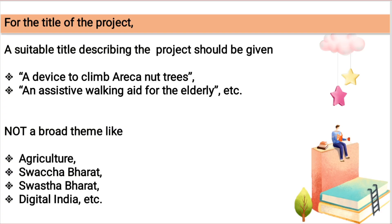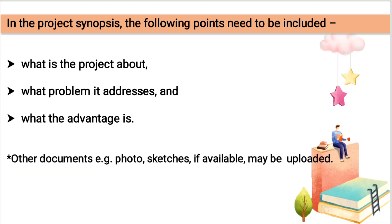These themes are very broad. They do not describe what type of project you are making to achieve Swachh Bharat or Swasth Bharat. So make sure your title completely describes your project. Those were just two examples. Now, next — how to write the project synopsis.